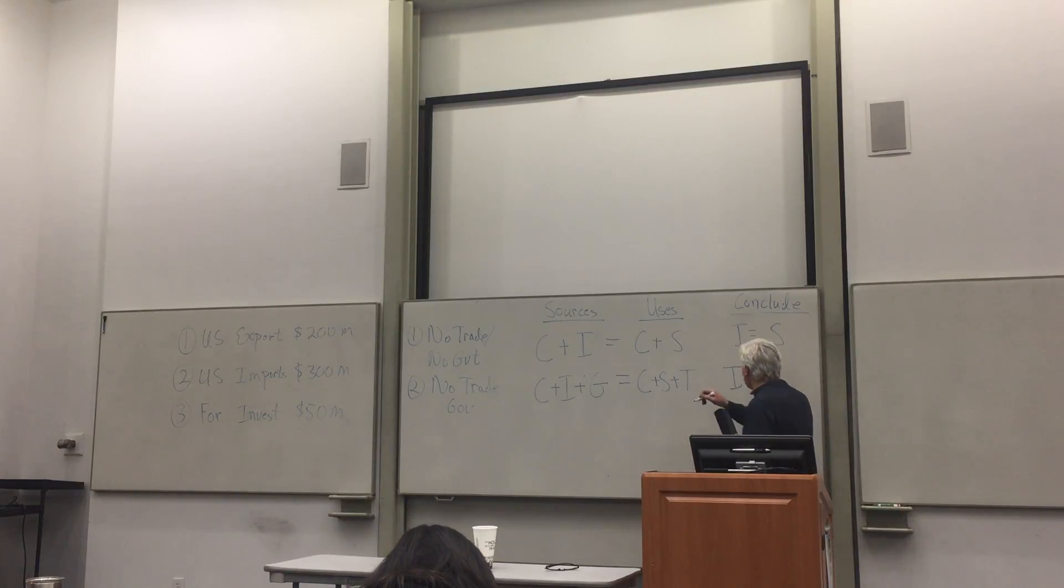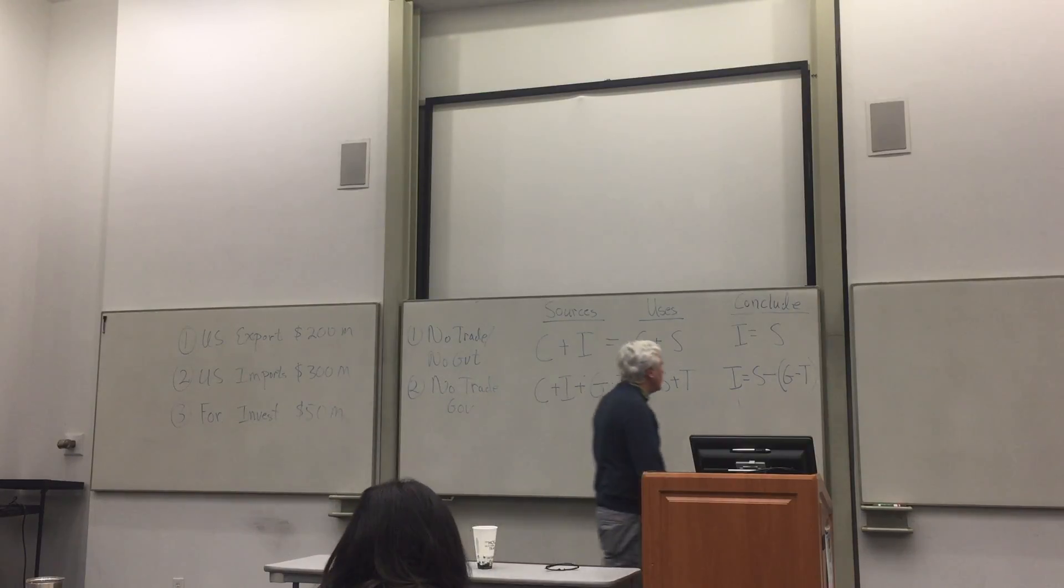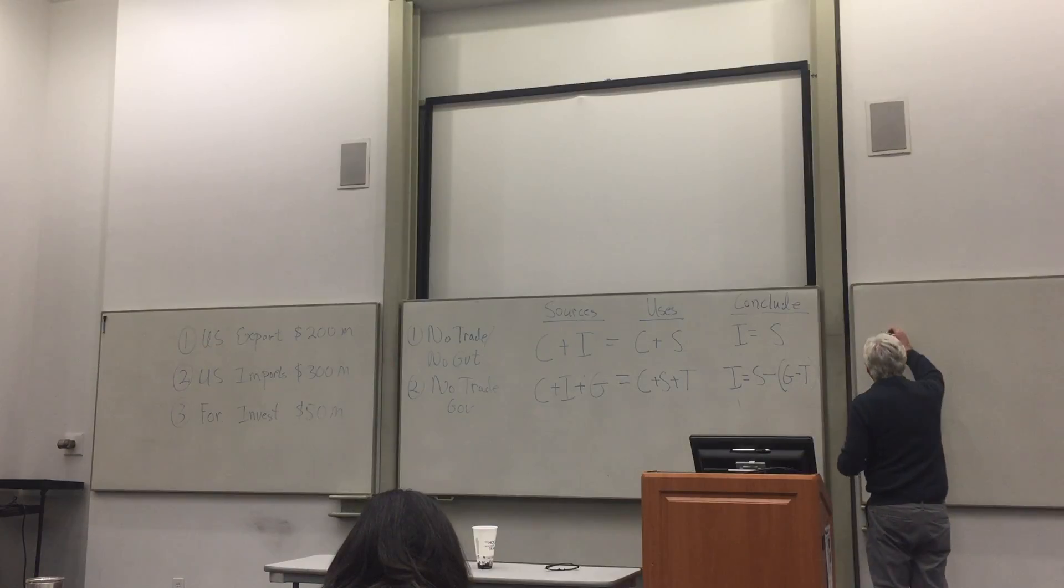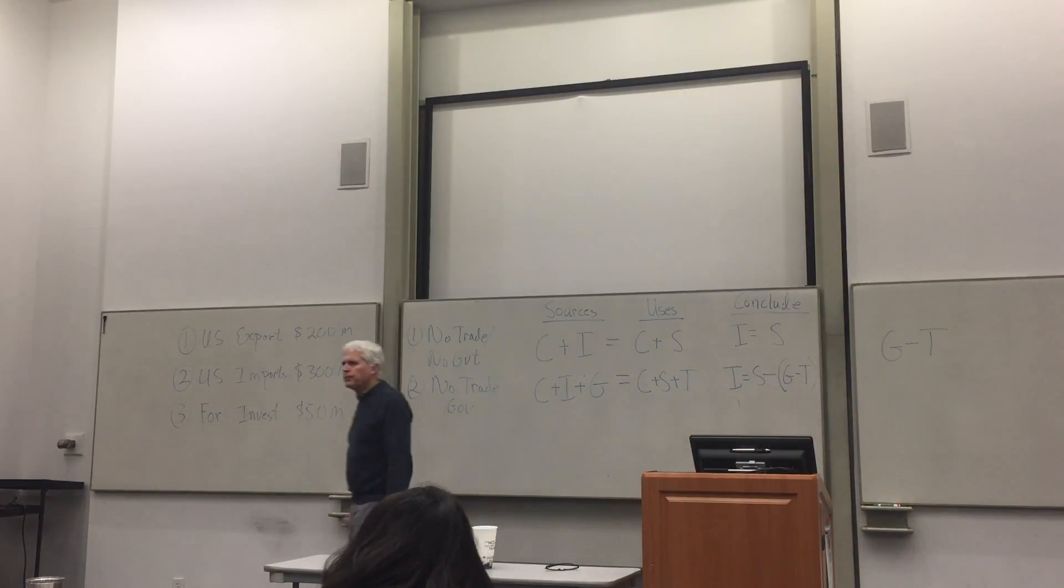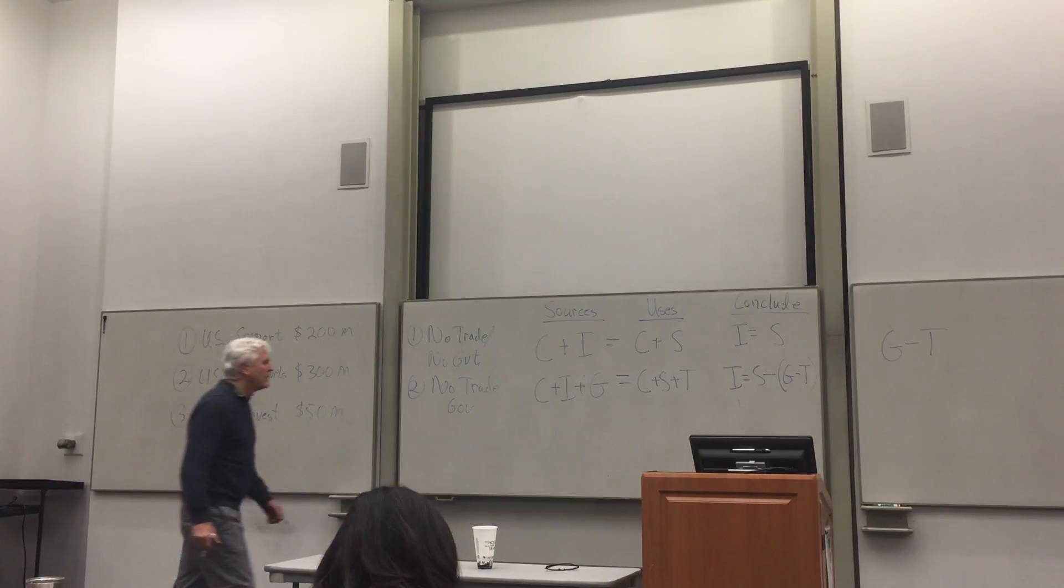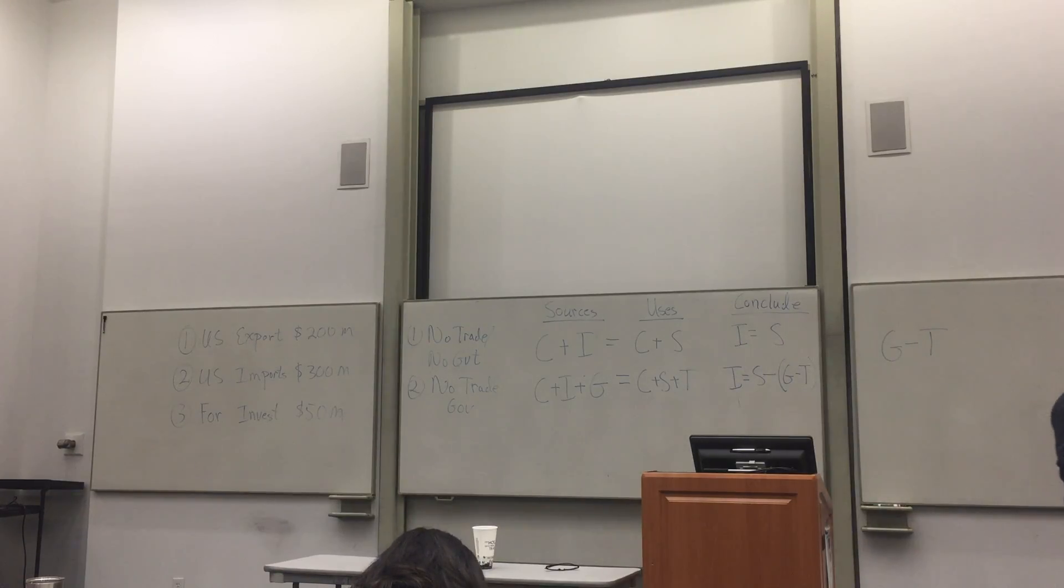So now we say the level of investment is going to be the level of savings minus government spending minus taxes. So, let's think about what that means. What's another word for the difference between government spending and taxes? That's the deficit. The level of investment in the economy is determined by the base rate of savings, but then when the government runs a deficit, they suck money out of the pool of funds that's available for investment.